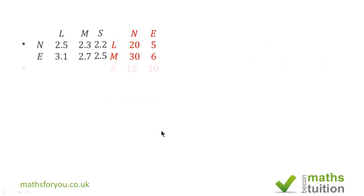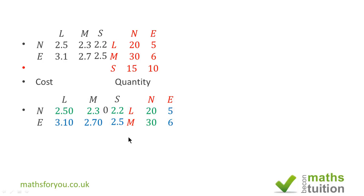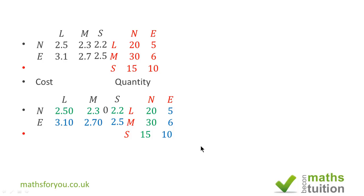Now to work out the cost. The numbers in green represent the cost and quantity for normal coffee — a green row and a green column. Then a blue row and blue column for espresso. For normal large cups: £2.50 × 20. For medium: £2.30 × 30. For small: £2.20 × 15. For espresso: £3.10 × 5 for large, £2.70 × 6 for medium, and £2.50 × 10 for small.